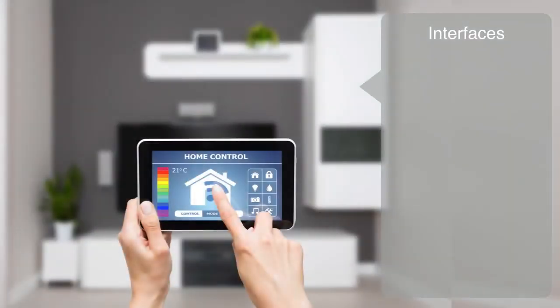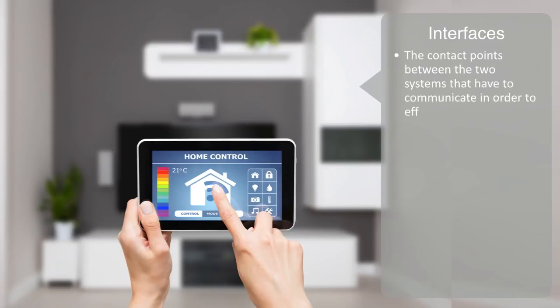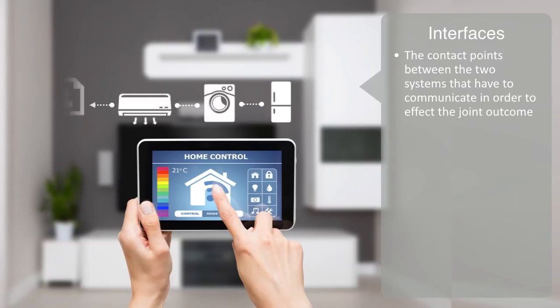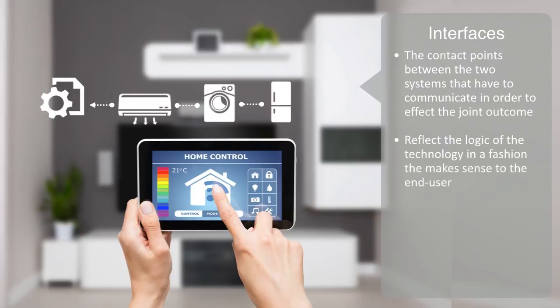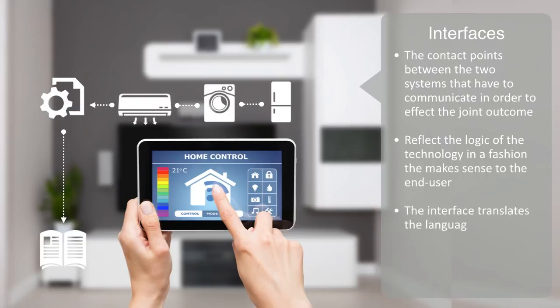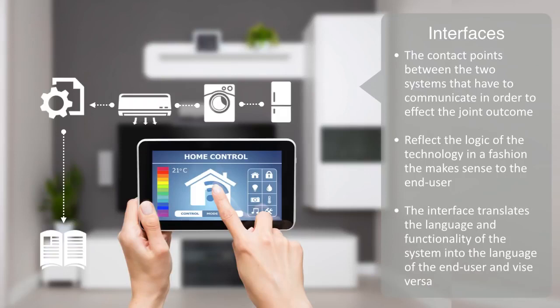Interfaces like the dashboard on our car, the signs in an airport, or the graphical user interface to your computer are the contact points between the two systems. They both have to communicate in order to affect the joint outcome. Interfaces are the way of communicating to people the set of procedures required for operating the technology. They reflect the underlying logic and algorithms through which the technology functions, but are expected to do so in a fashion that makes sense to the end user. On the social side, they use symbols, metaphors, and stories that people instinctively relate to. The point of an interface is to translate the language and functionality of the system into the language of the end user, and vice versa.